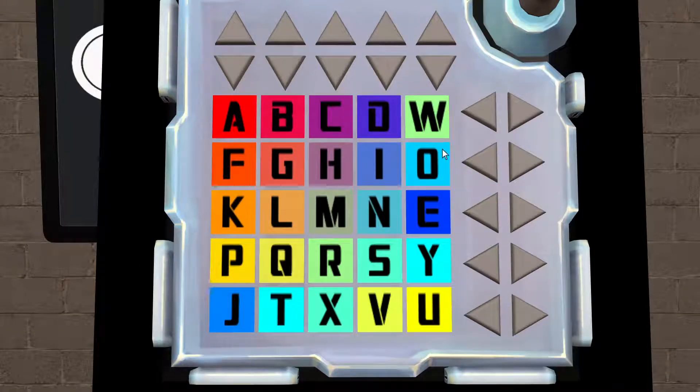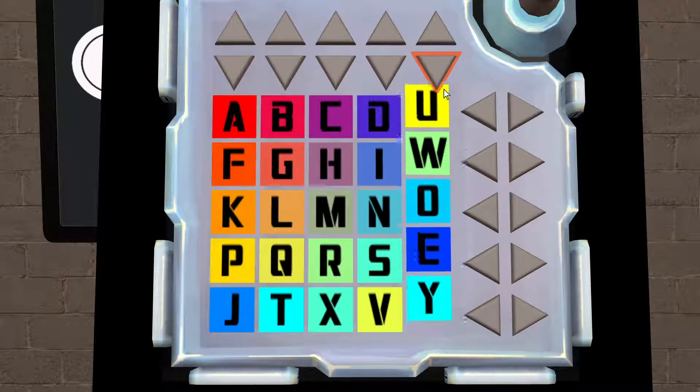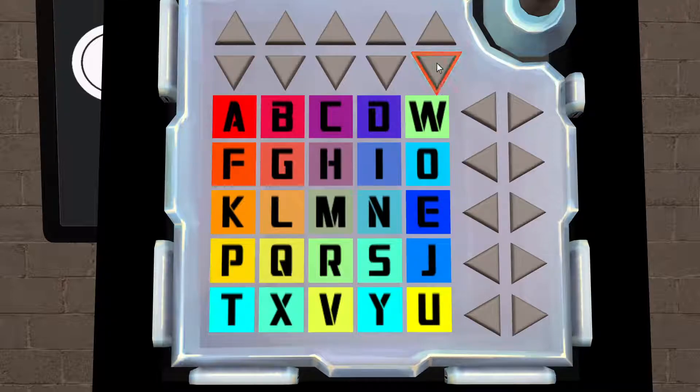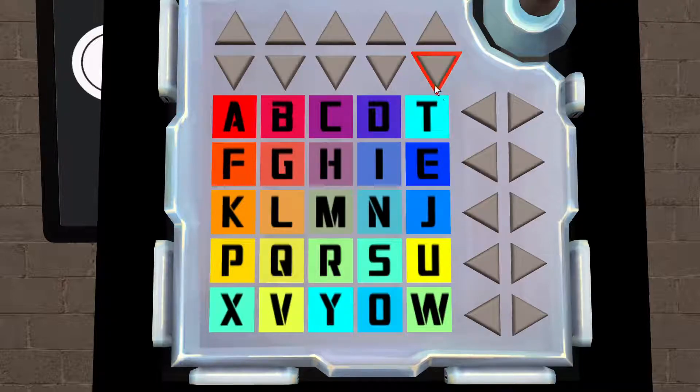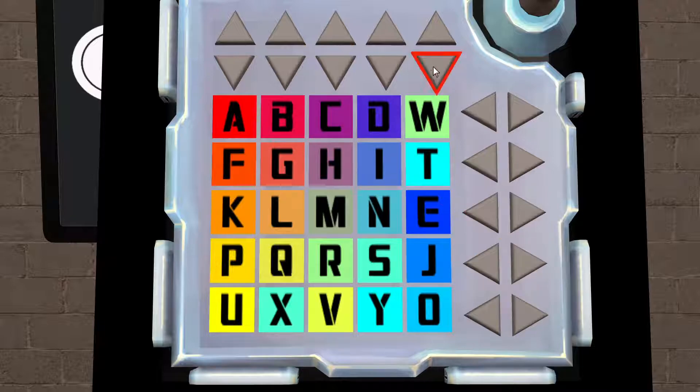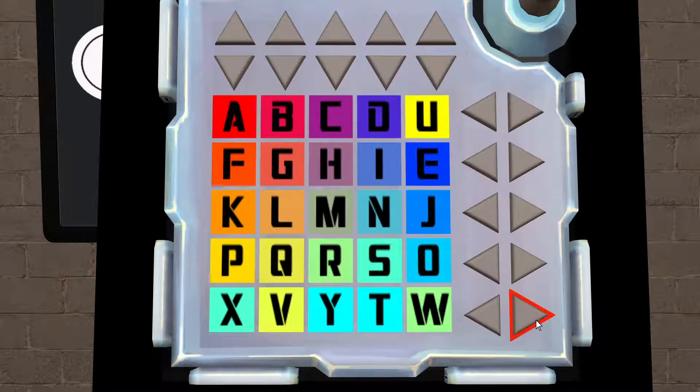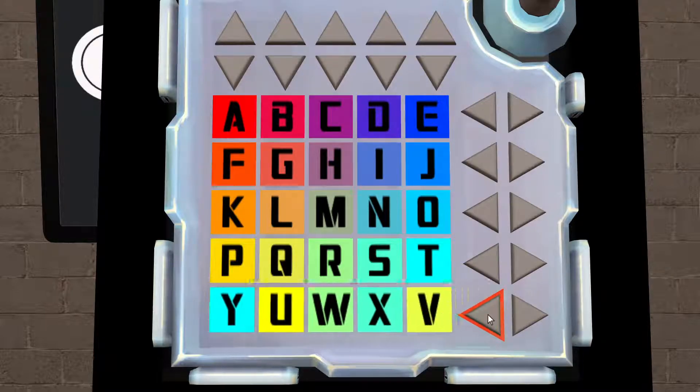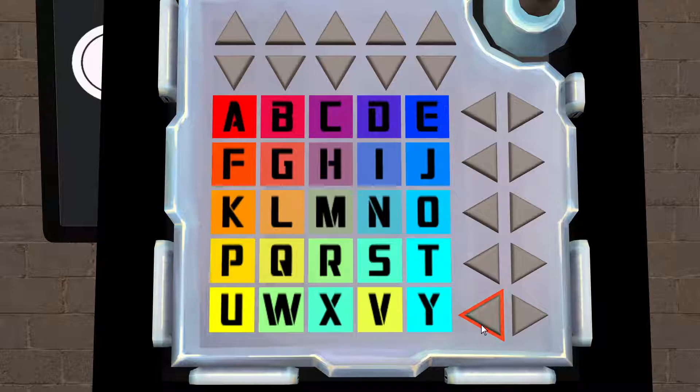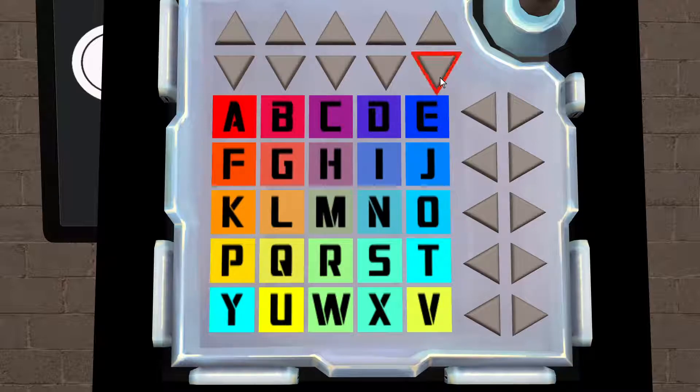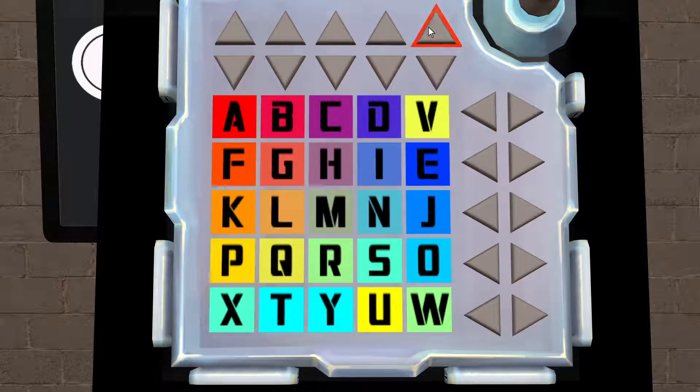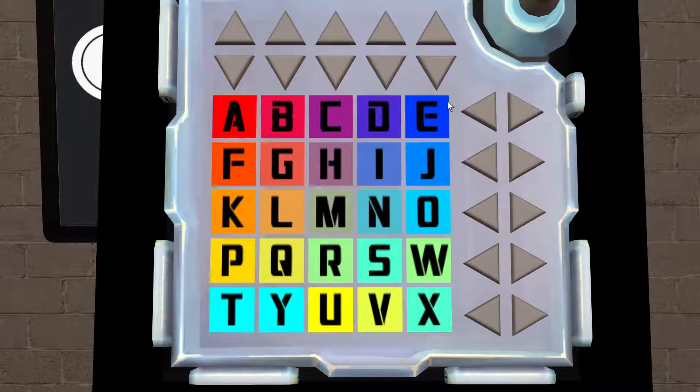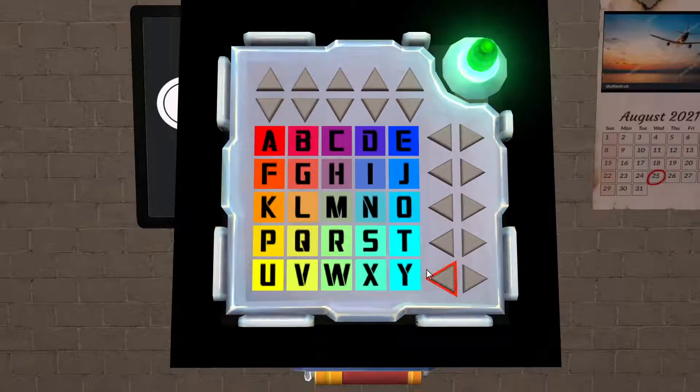And then what we do is we finish the rows going from top to bottom, and then we do the final row. So let's see, we have E, then we want J, then we want O, then we have T. And then we do the same thing with the last row that we did in the first method, in which we bring the letter we want down, and then set it up to bring it back. T, U, V, W, X, and Y.